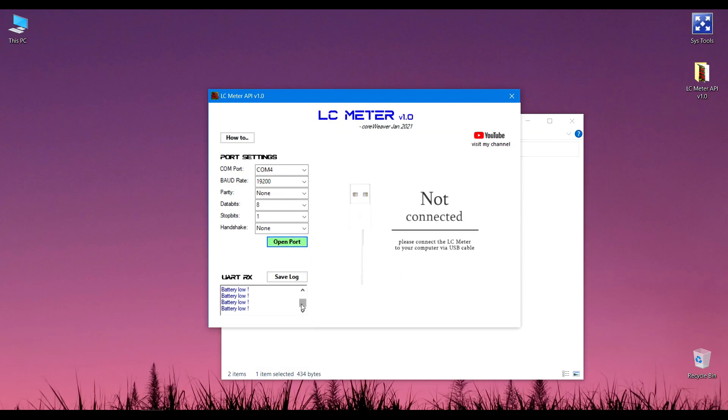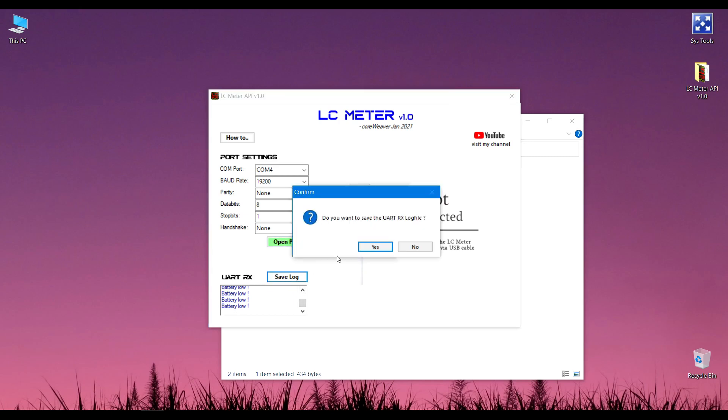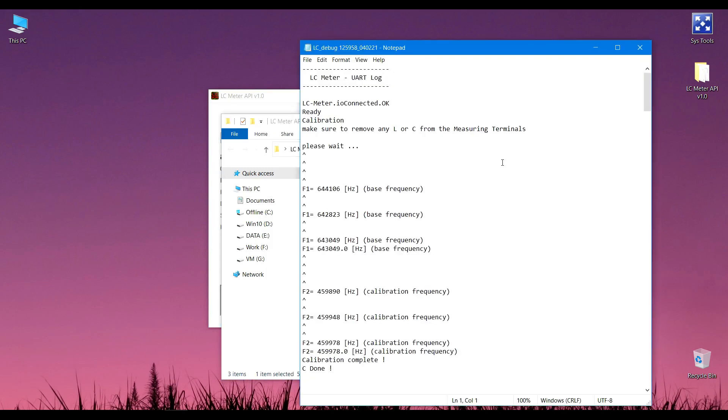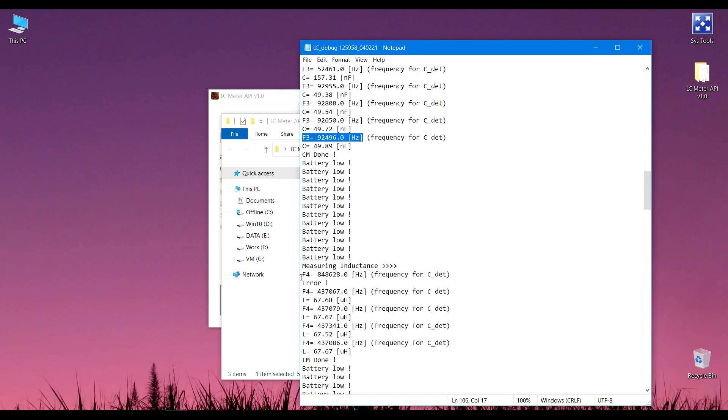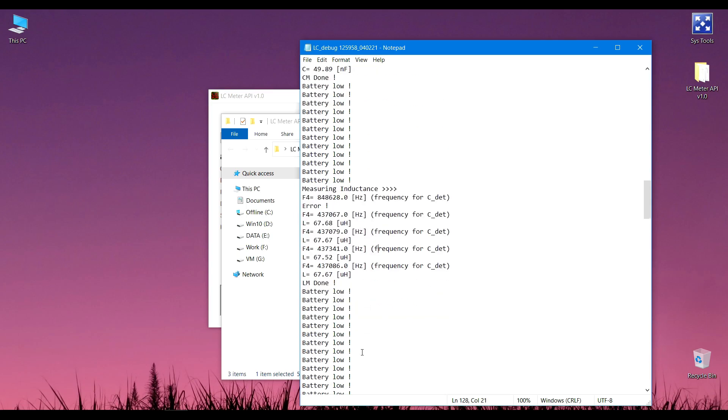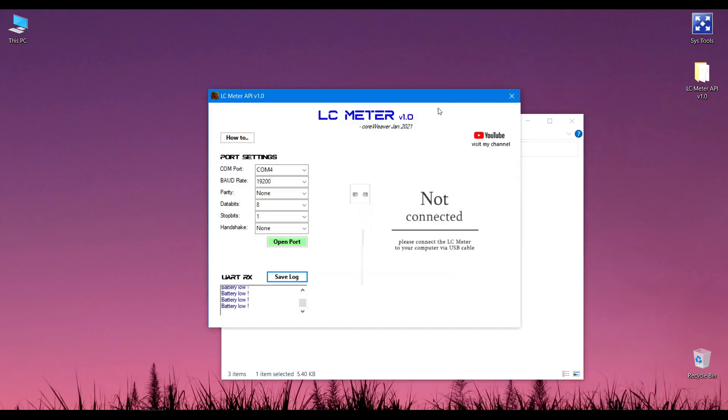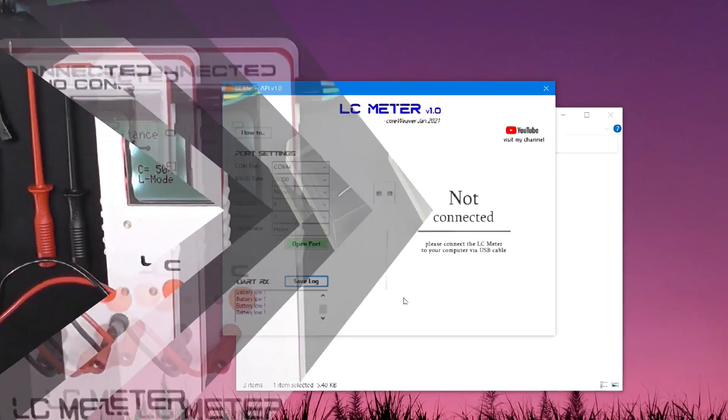Oh, and one more thing. This section here contains a log of the UART communication, and this can also be exported if you want to inspect it later for debug purposes. The log is also saved as plain text. For instance, here when we measured the 49 nanofarad capacitor, this was the F3 frequency, 92 point something kilohertz. Or here for this inductor, F4 was 437,079 Hertz. You can use these values if you want to manually solve those equations five and six, I believe, to double-check everything.